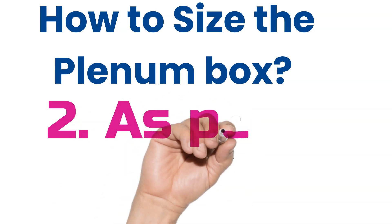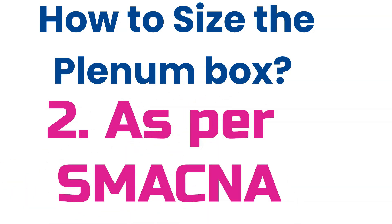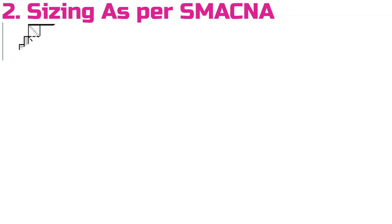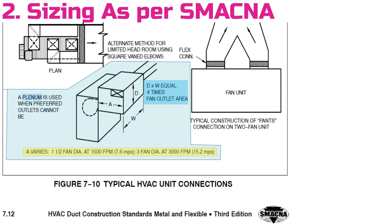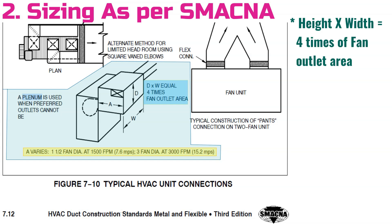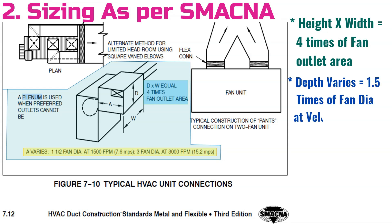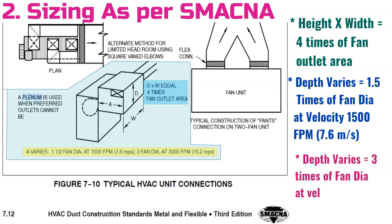Plenum box sizing as per SMACNA standard: height × width = 4 times the fan outlet area. For depth: depth = 1.5 times the fan diameter at a velocity of 1,500 FPM (7.6 m/s), and depth = 3 times the fan diameter at a velocity of 3,000 FPM (15.2 m/s).